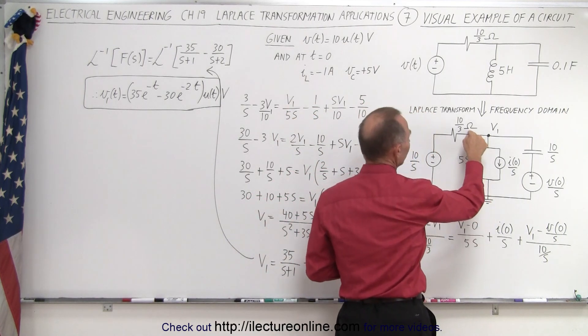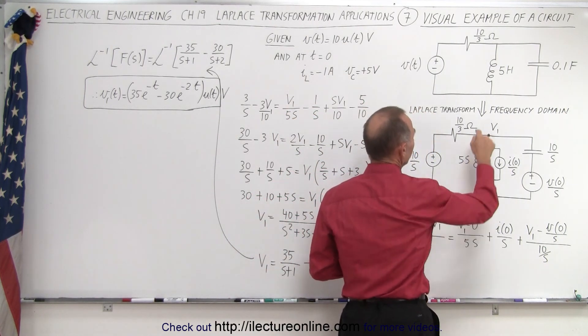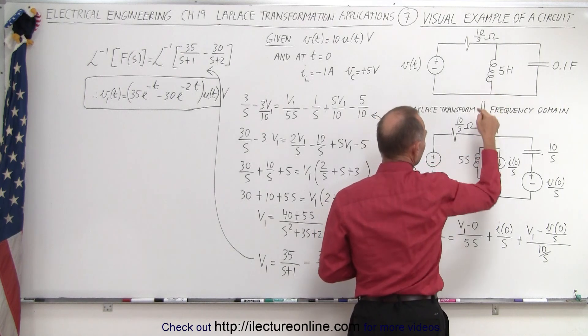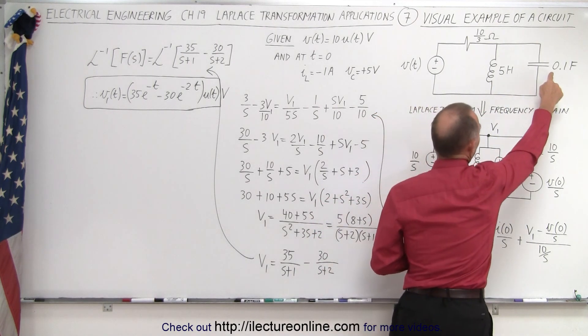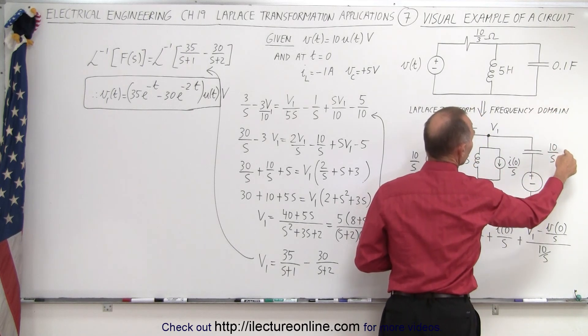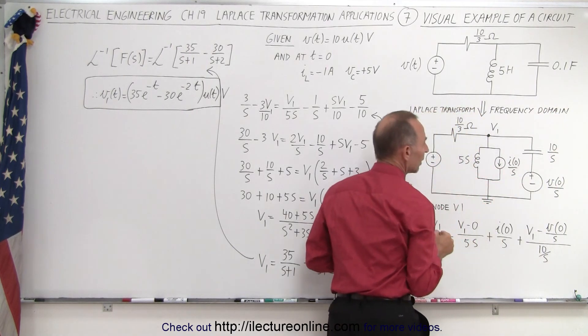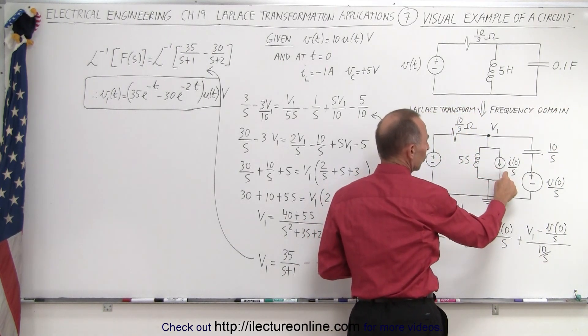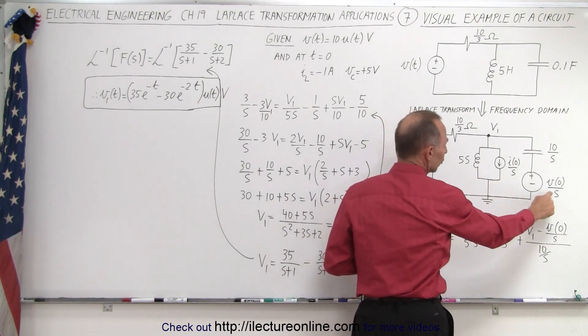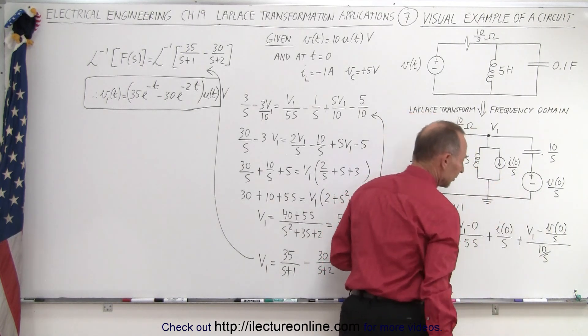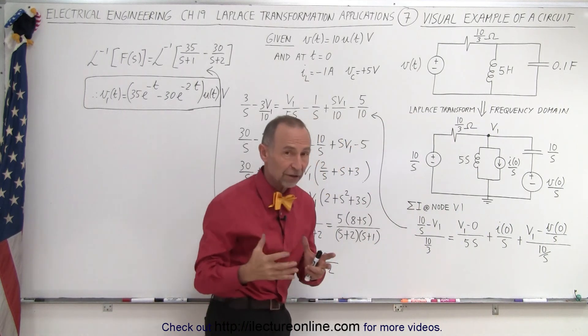The resistor stays the same as 10/3 ohms. The Laplace transform of the inductor in the frequency domain is 5S. The capacitor in the frequency domain is 10/S. Then here we can see the initial current through the inductor and the initial voltage across the capacitor. That is essentially the transformed circuit.